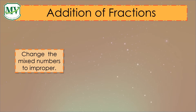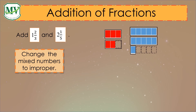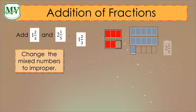Now let's have another example. Add 1 and 2 over 3 to 2 and 1 over 5. For better understanding, let's look at the illustrations. Each of these boxes are divided into 3, which represents the denominator. There are two boxes representing the mixed number 1 and 2 over 3 — one whole box fully shaded represents the whole number 1, and another box with 2 out of 3 divisions shaded represents 2 over 3. For the mixed number 2 and 1 over 5, there are two whole boxes fully shaded to represent the whole number 2, while 1 out of 5 boxes is shaded to represent the fraction 1 over 5.